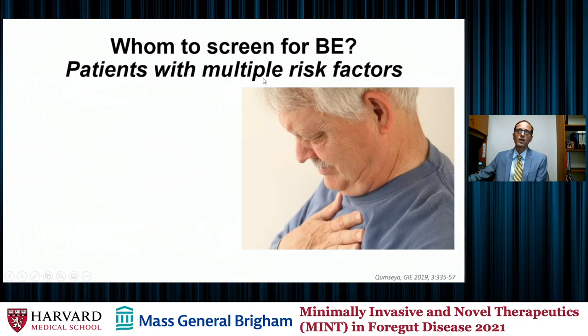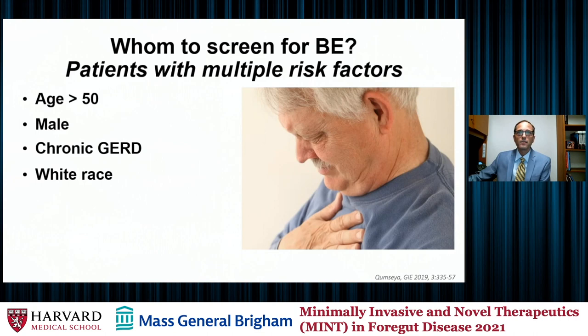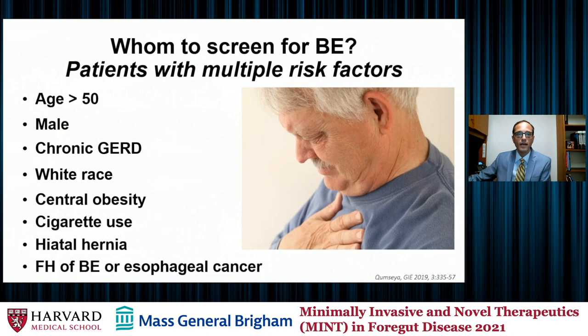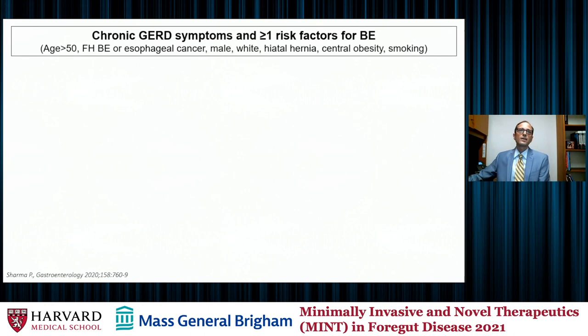So who do we screen for Barrett's? Patients with multiple risk factors — age above 50, being male, chronic reflux symptoms, white race (higher risk than other races and ethnicities), central obesity, cigarette use, hiatal hernia, and certainly patients with a family history of either Barrett's esophagus or esophageal cancer.